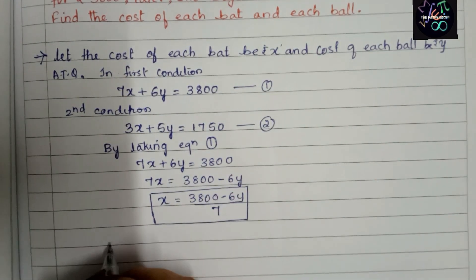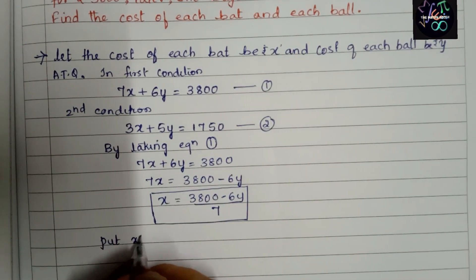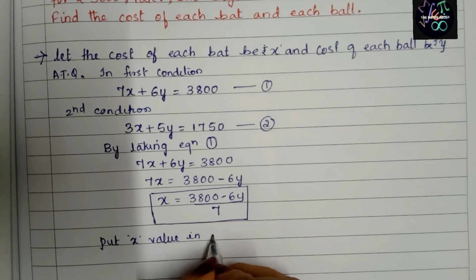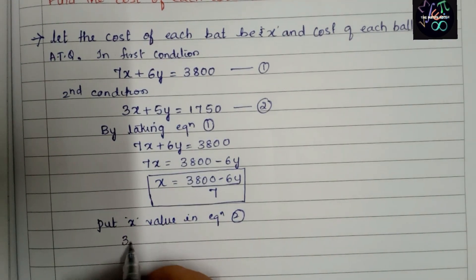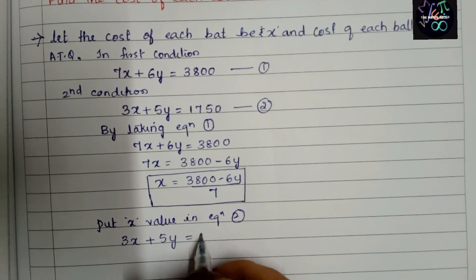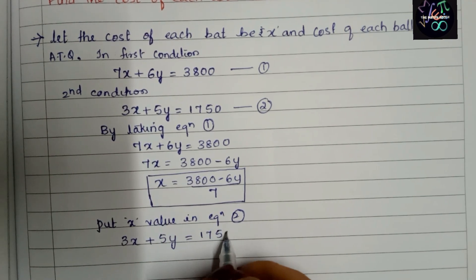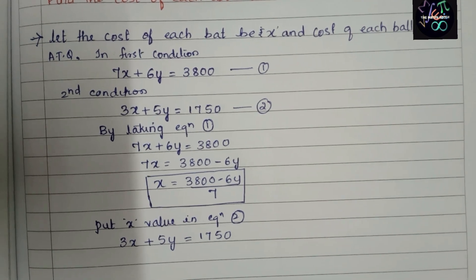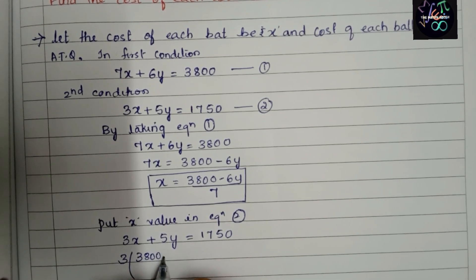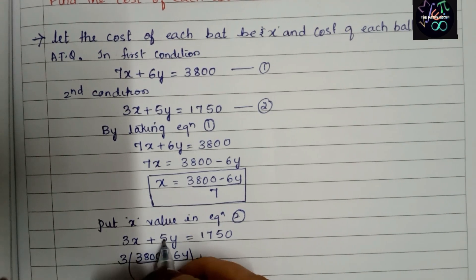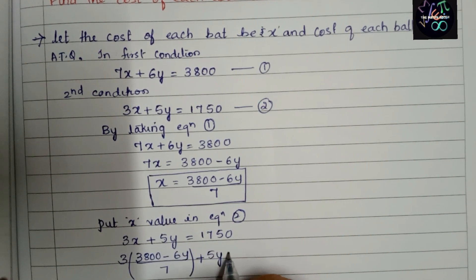Taking Equation 2: 3x + 5y = 1750. Substituting the x value: 3 × [(3800 − 6y) / 7] + 5y = 1750.